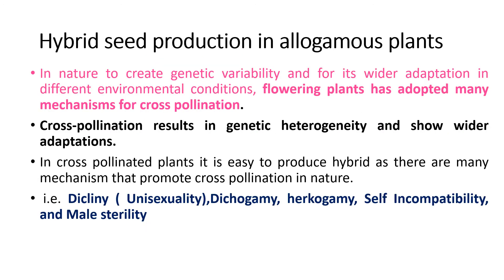Hybrid seed production in allogamous plants: in nature, to create genetic variability and for wider adaptation in different environments, flowering plants have adopted many mechanisms for cross-pollination. Cross-pollination results in genetic heterogeneity and shows wider adaptation, so it is supported by nature. In cross-pollinated plants, it is easy to produce hybrid as there are many mechanisms that promote cross-pollination.